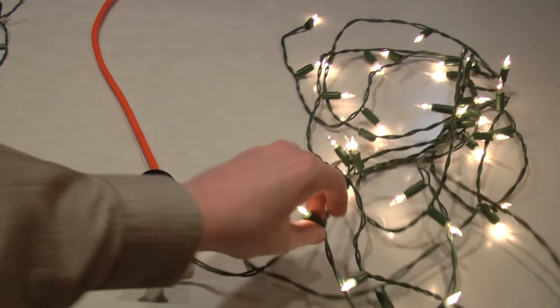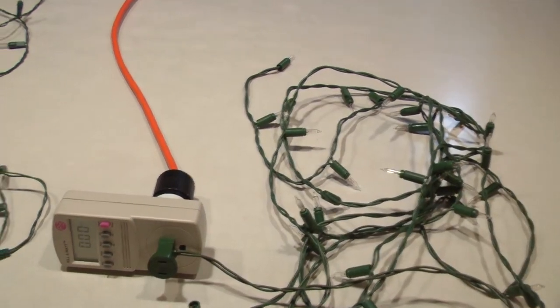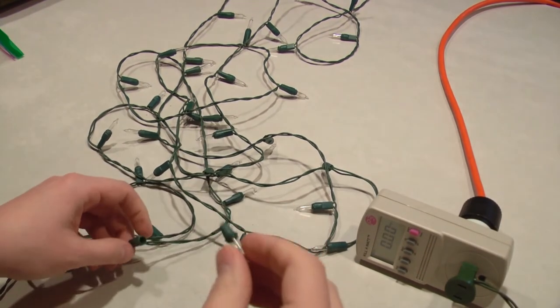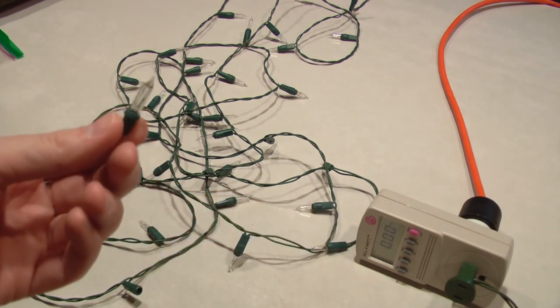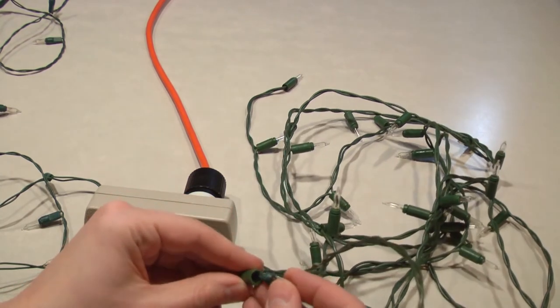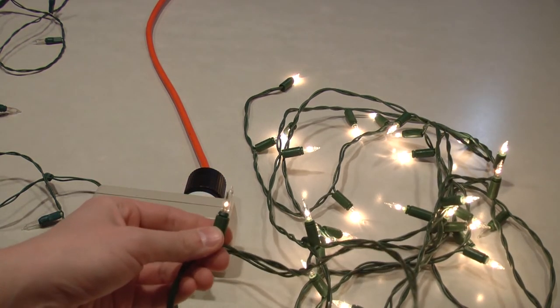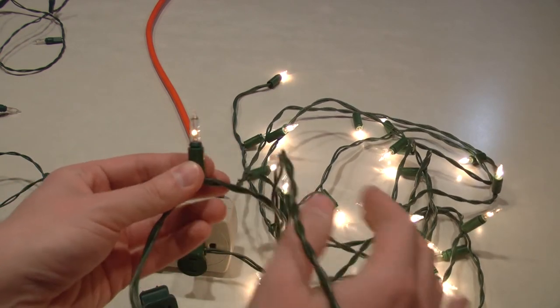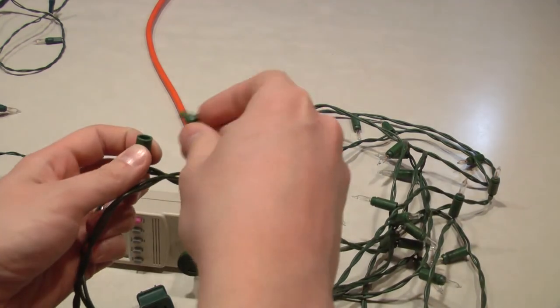and I take a bulb out of this set, they're both 3.5 volt bulbs. They should be interchangeable, right? Let's try it. So I'll take the bulb from the first set, plug it into the second set, and look how dim it is compared to the others. Maybe it's hard to tell on camera, but I think you can see how much dimmer this bulb is, even though it is a 3.5 volt bulb.